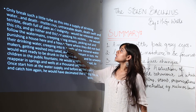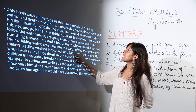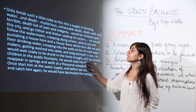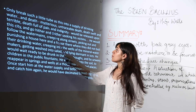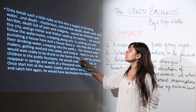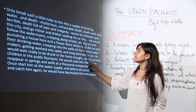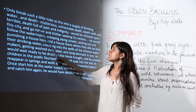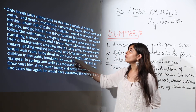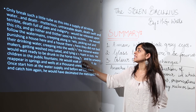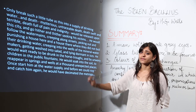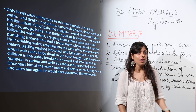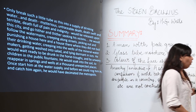As the anarchist declares: 'Only break such a little tube as this into a supply of drinking water and death — mysterious, untraceable death — death swift and terrible — death full of pain and indignity.' This encapsulates the anarchist's chilling vision of mass destruction through the stolen bacillus.